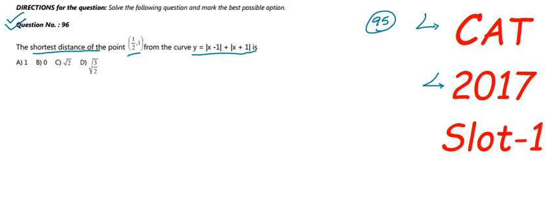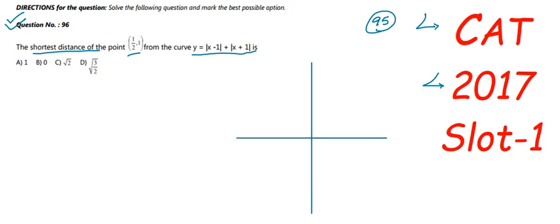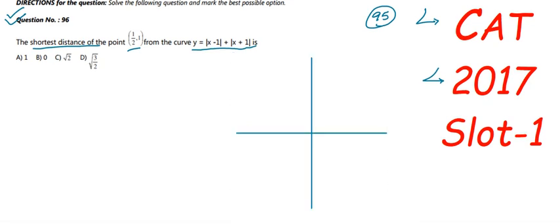To solve this, we need to draw a graph with the curve and the point. This equation has two different terms inside two different modulus signs. Since each term can be either positive or negative, from two terms we can get four total equations. Let us jot down our four equations.